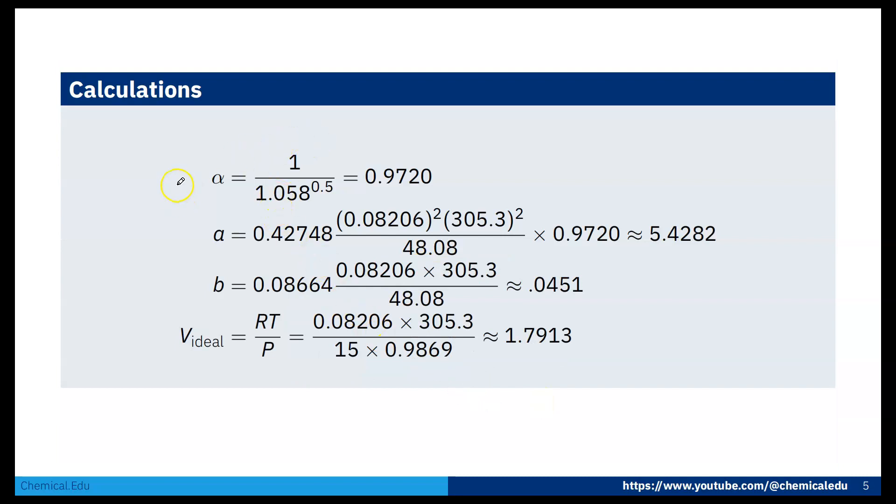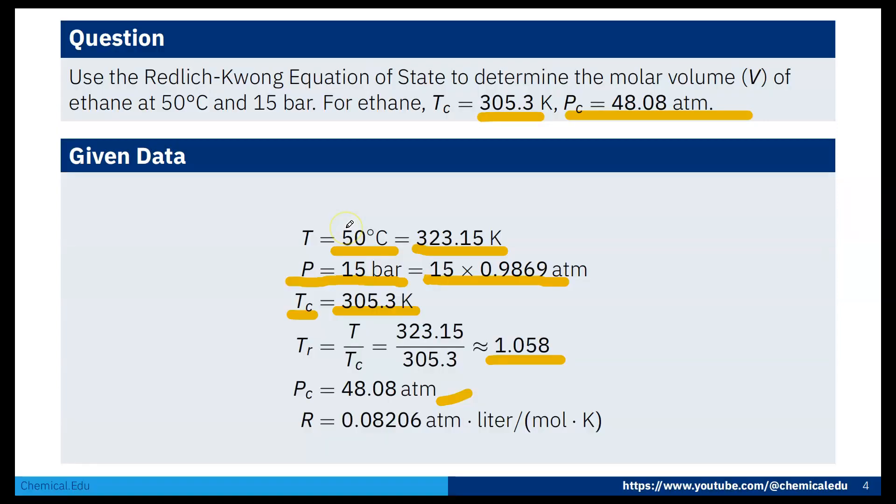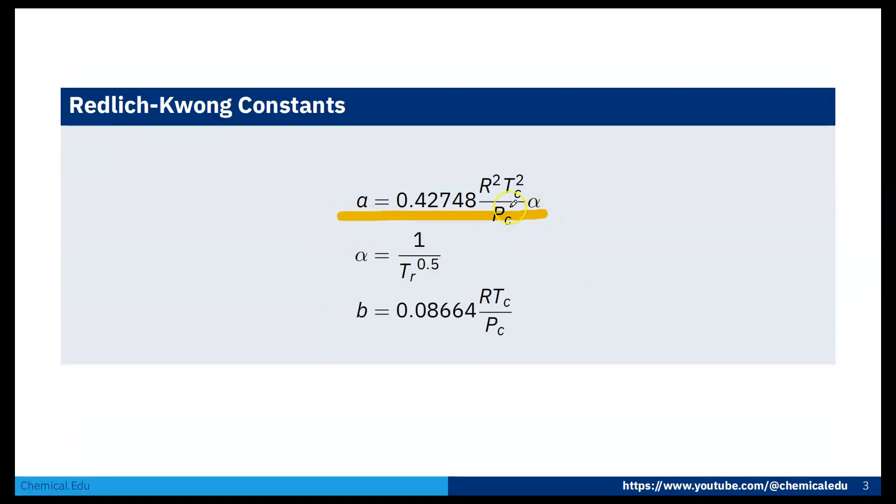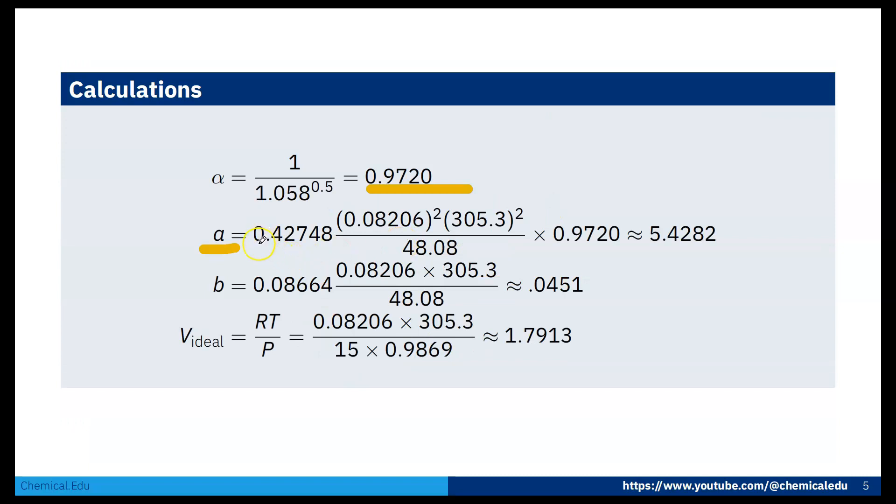Now first calculate alpha: 1 over Tr to the power 0.5, so 1 over 1.058 to the power 0.5, which is 0.9720. Then we calculate A using this equation: 0.42748 times R times Tc squared over Pc times alpha, so we get A is 5.4282.